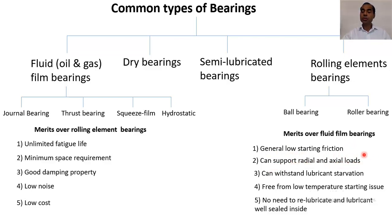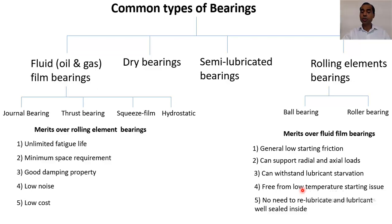Rolling element bearings can withstand lubricant starvation — if there is less lubricant it is not a big problem because the friction coefficient is very low due to the rolling element. They are also free from low temperature starting issues, since at low temperatures the high viscosity of liquid is not a problem here — the low coefficient of friction is achieved by balls or rollers rolling.